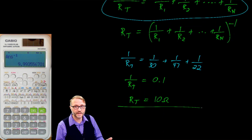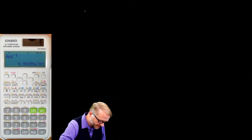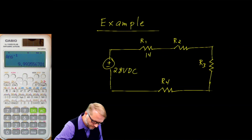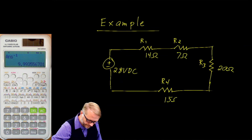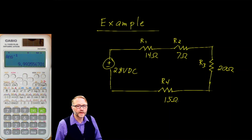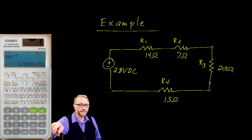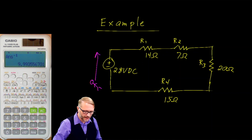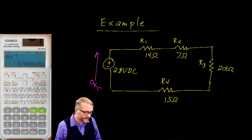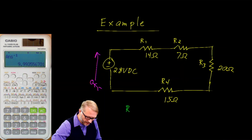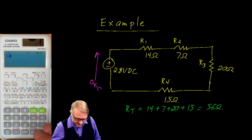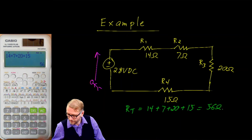So far we have series circuits and parallel circuits. Here's a series circuit example — you can tell because it goes in a loop with only one path. The total resistance: R total is 14 plus 7 plus 20 plus 15, which gives us 56 ohms. We can redraw the circuit as a single 56-ohm resistor. As far as the 28-volt power supply is concerned, these are the same circuit.